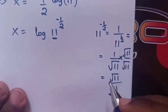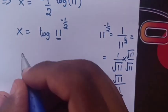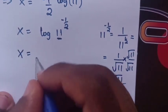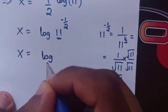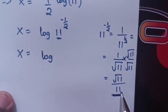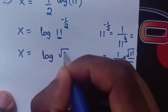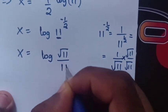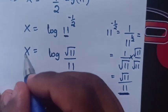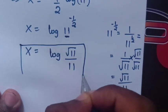So we'll substitute this here. Therefore, x = log(√11/11). This is the answer for the value of x.